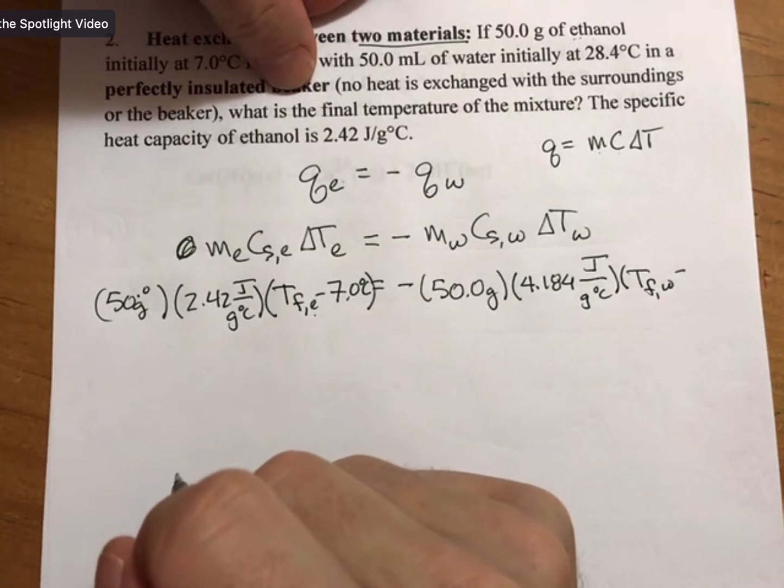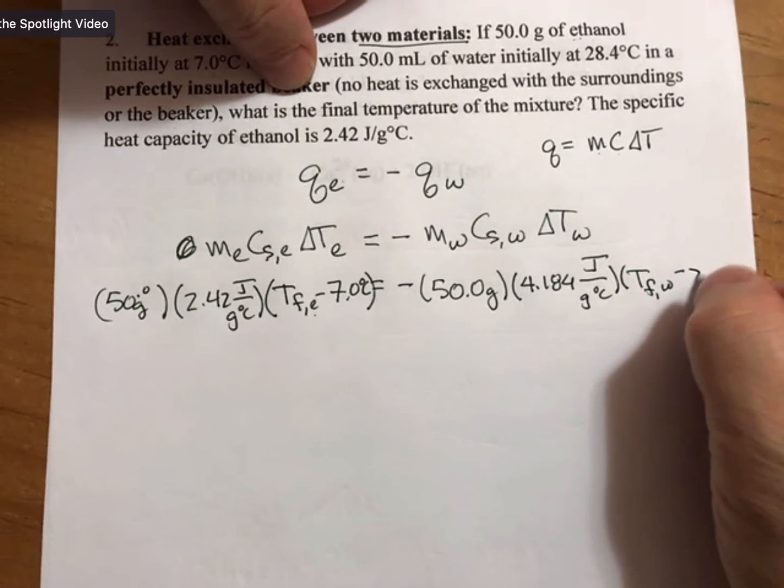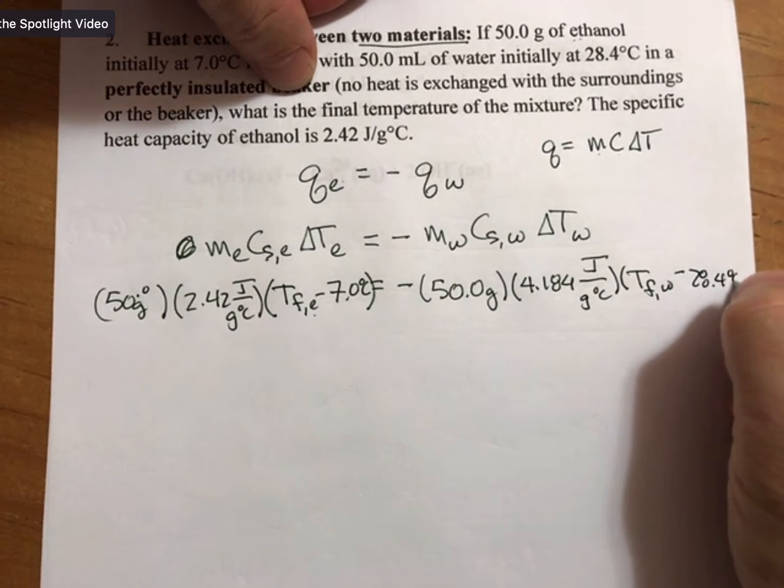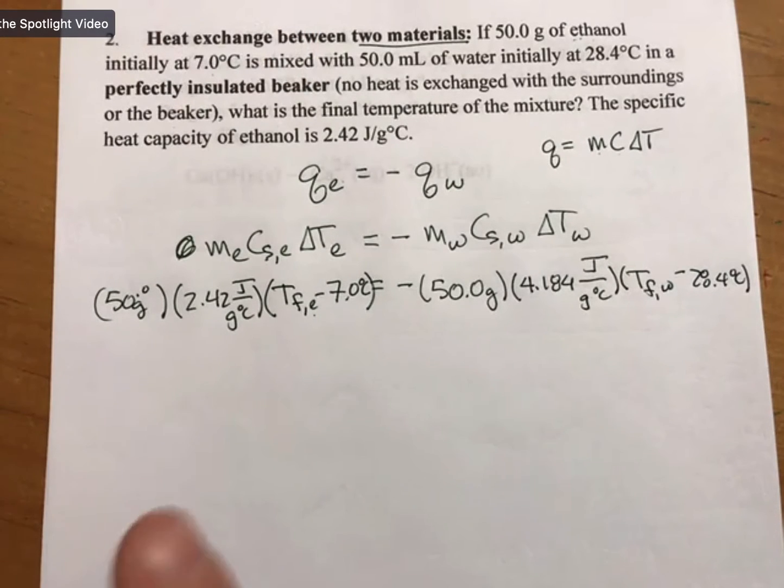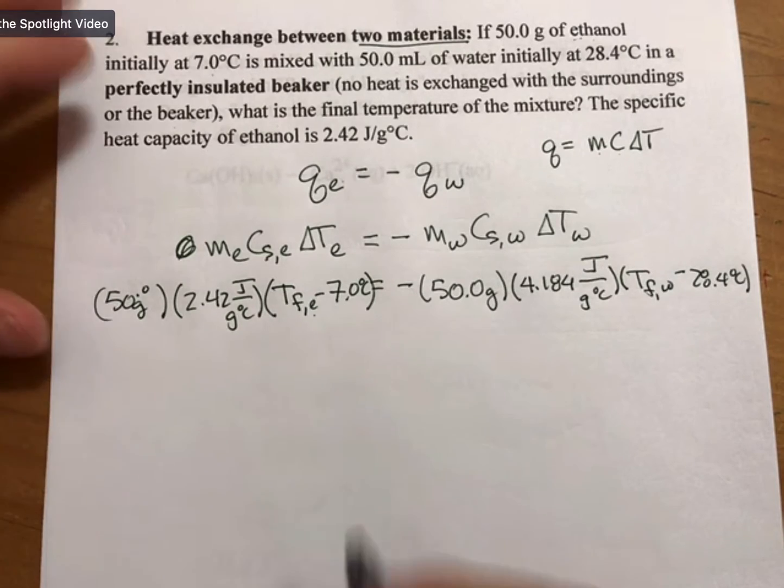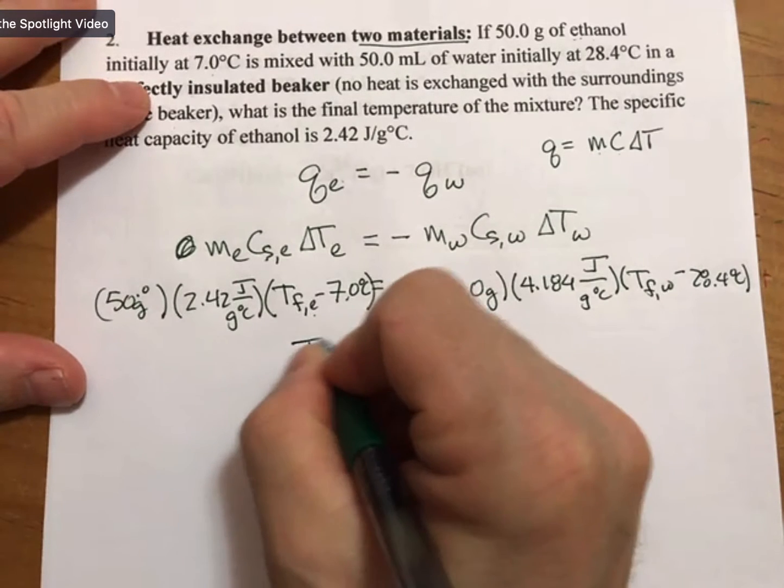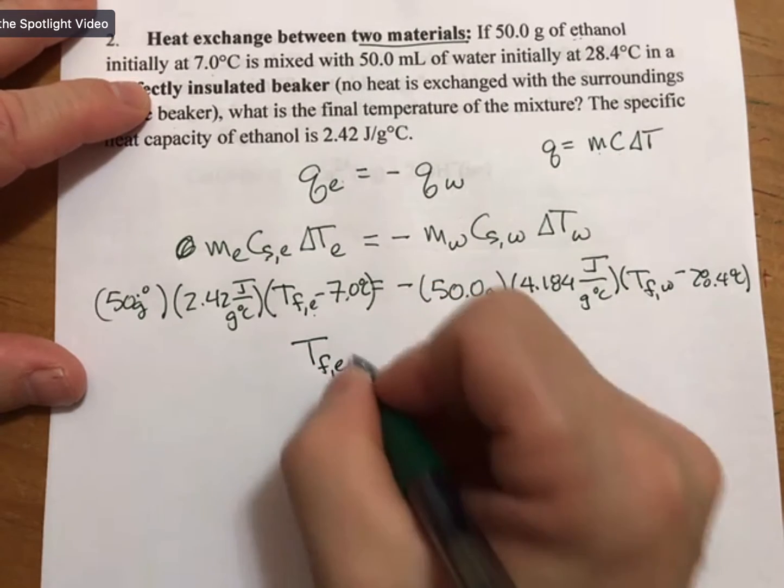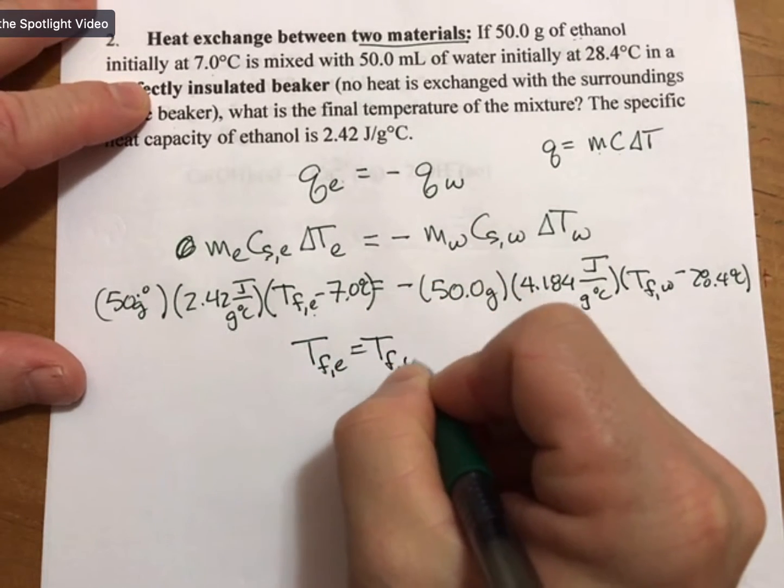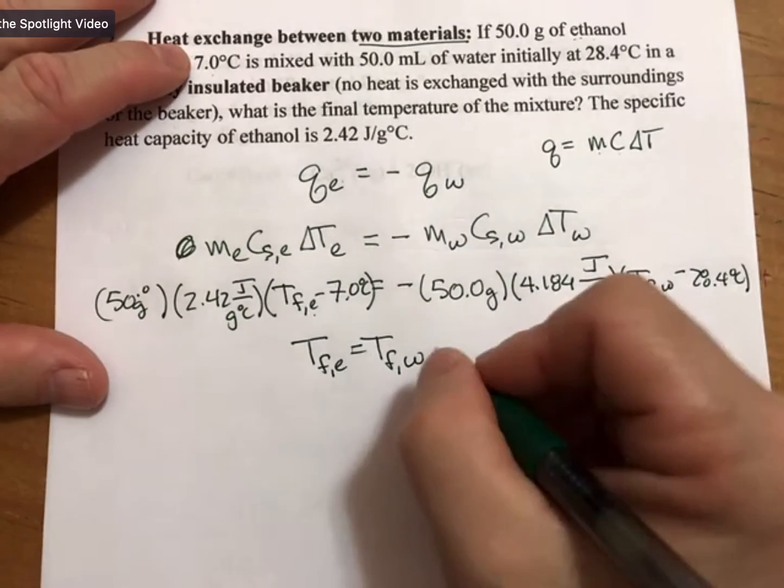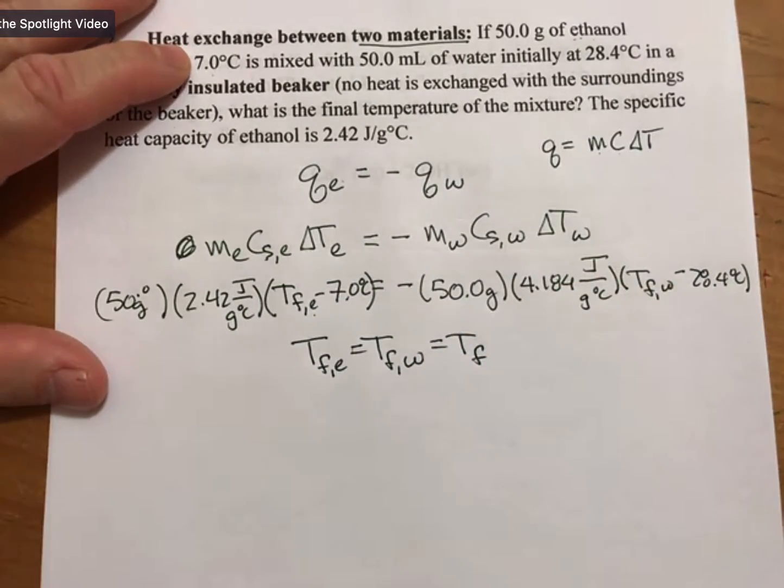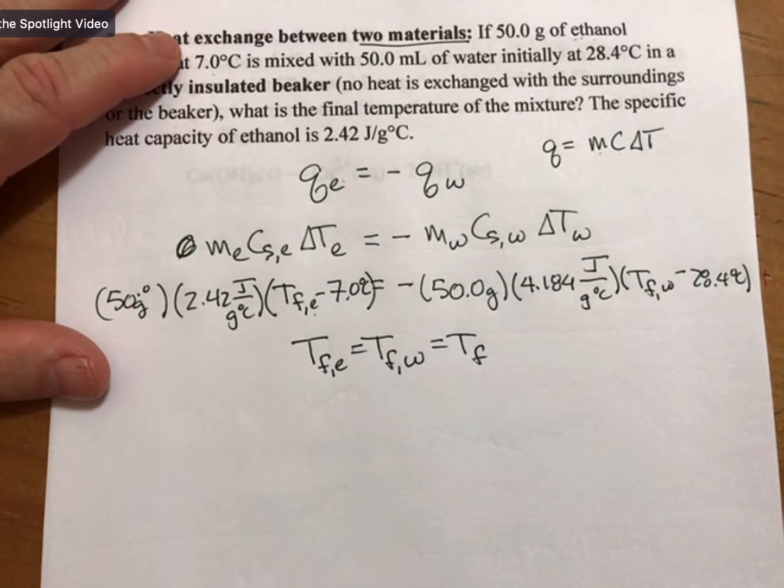And our water final temperature minus 28.4 is the last term. Now, the only thing we don't know is T final. And T final for ethanol is equal to T final for our water, and so you just might want to call them both T sub final, T sub f.